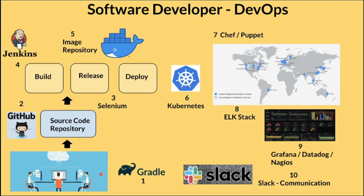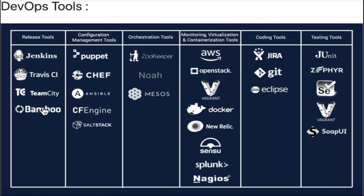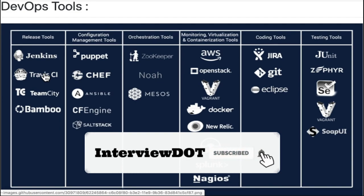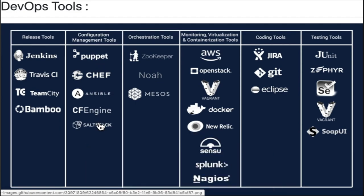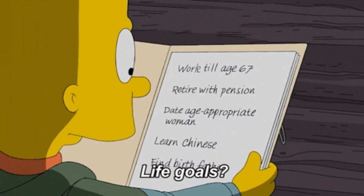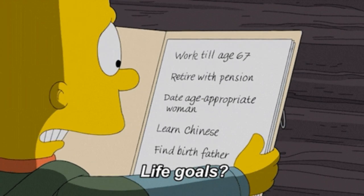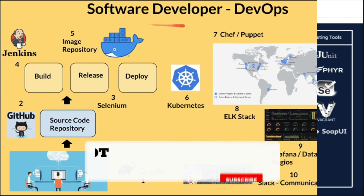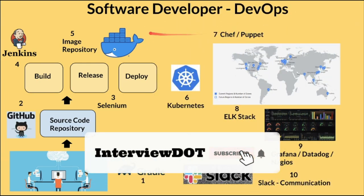As a DevOps engineer you have more responsibilities than a software developer, and a lot of skills are required. I would suggest starting to learn these tools as side projects — for example, CI/CD tools like Jenkins, Travis CI, or TeamCity, one by one. Then move on to configuration management, orchestration tools like Kubernetes, cloud environment coding tools, and testing tools. Have a plan and start slowly, one by one — hope this information is useful, all the best for your career.